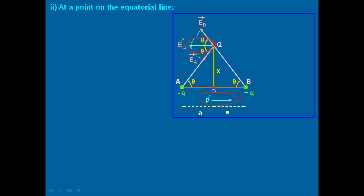So the direction of the resultant electric field is opposite to the dipole moment vector, and you can represent it using the unit vector −î, because it is going in the negative x-axis direction. Let us now find out the magnitude of Eq.